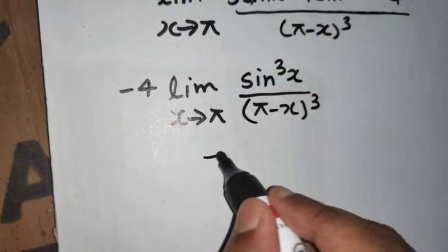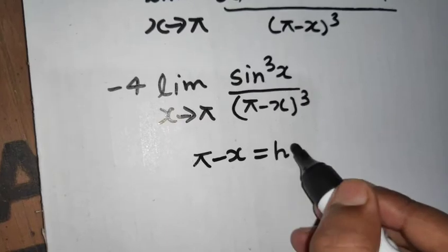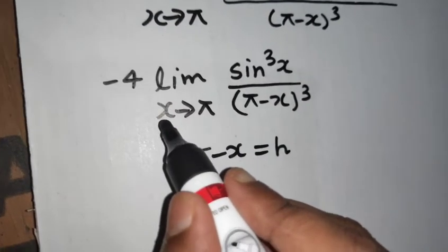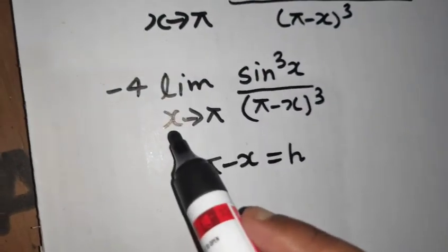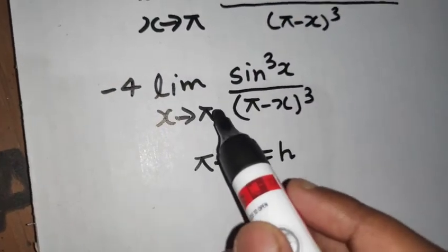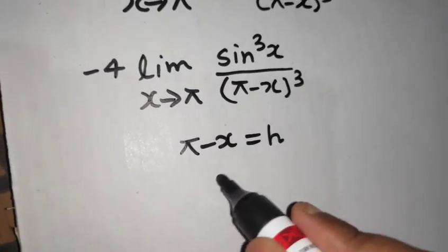The first one might be we can take this pi minus x to be equal to another variable. I am just transforming this to variable tending to 0, variable approaching to 0. Here variable is tending to non-zero constant. So I want to change it because then I can use that formula for sine.